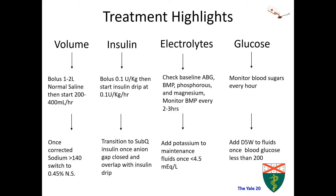The anion gap is closely monitored in DKA, as it indicates the amount of ketones in circulation, and once it is resolved, indicates that the imbalance has been corrected. Once the anion gap has closed, it is very important to remember to give subcutaneous long-acting insulin, which is overlapped with the insulin drip for a few hours before treatment is completed.